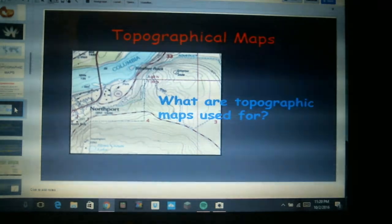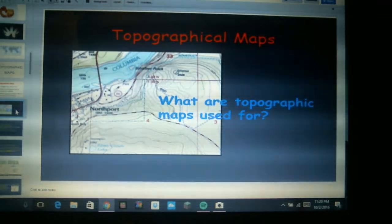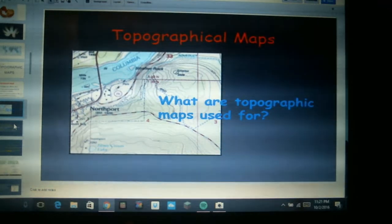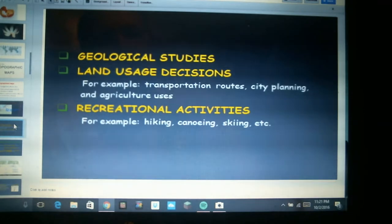These topographical maps are used for lots of things, especially for governmental work but also for individual persons. The government uses them for geological studies to see how water is going to flow in one place or the other, land usage decisions. For instance, when you are planning out a railroad track you want to have it as flat as possible, you want to have everything as close to the same elevation as you can. And so using the contour lines you'll be able to tell which locations have the same altitude.